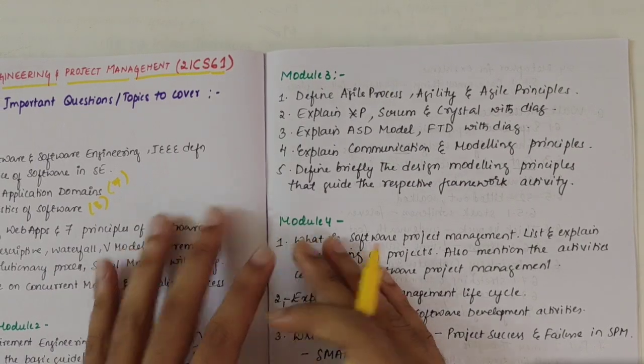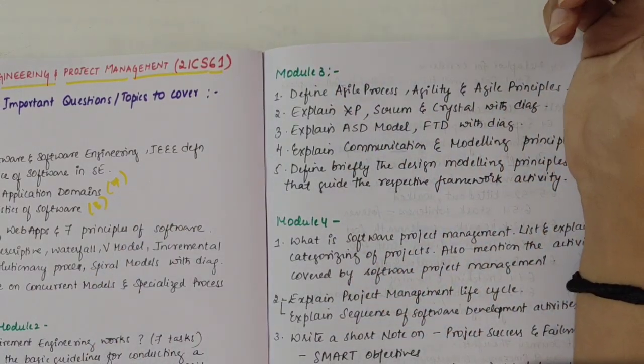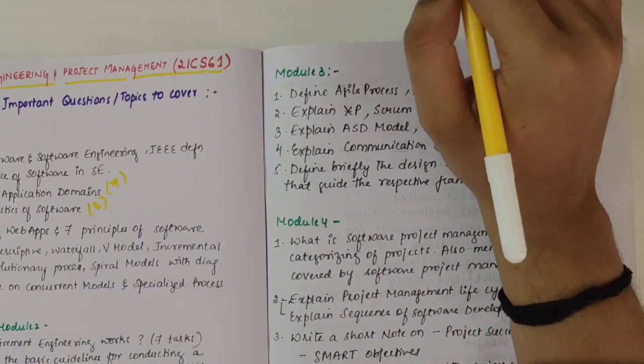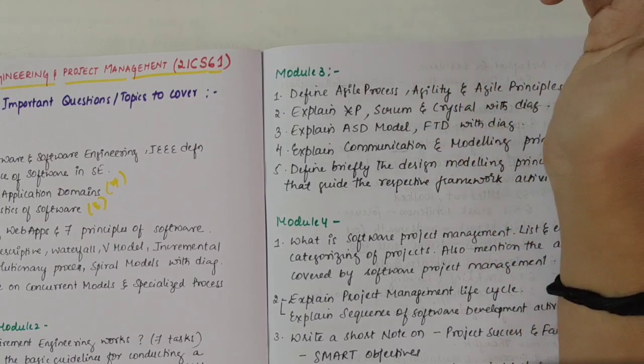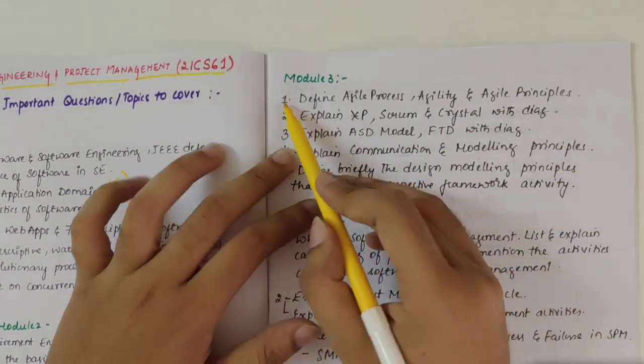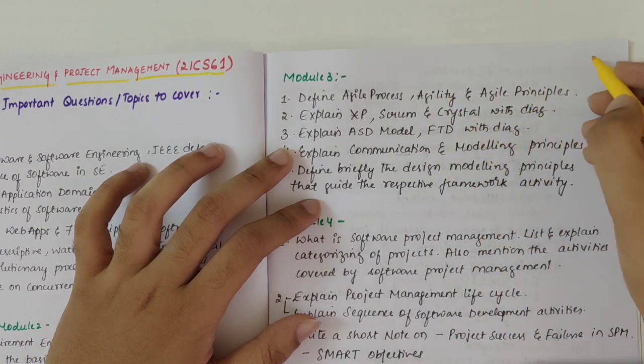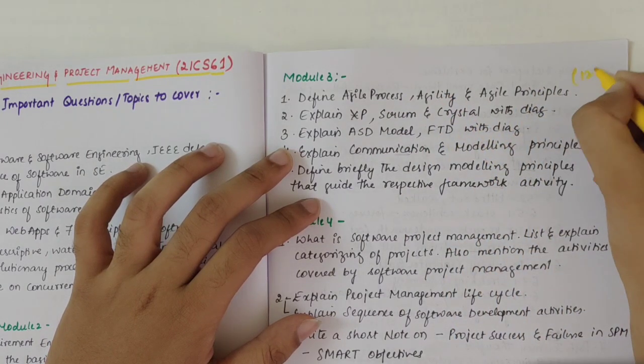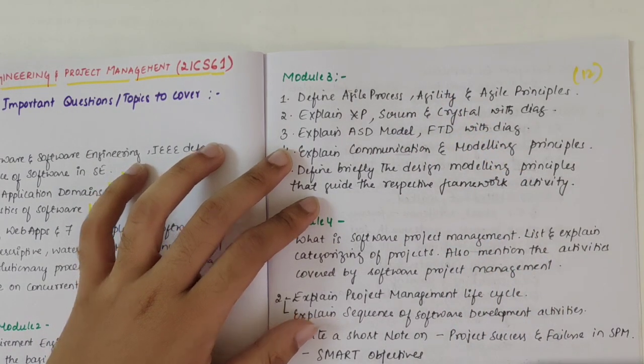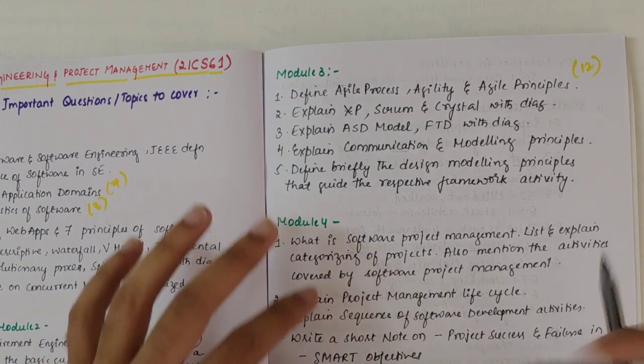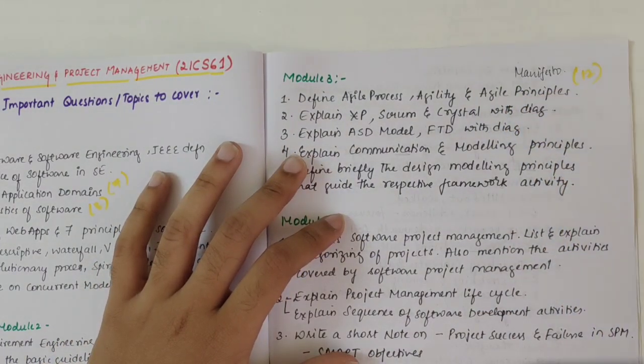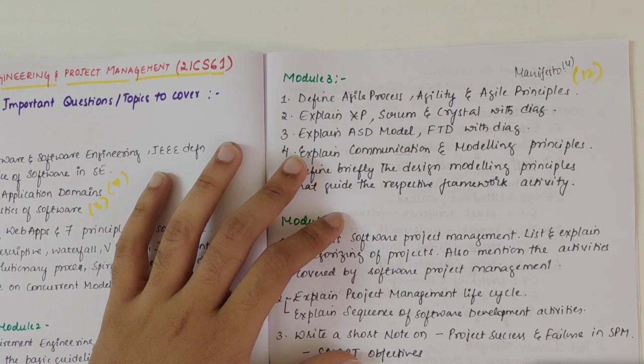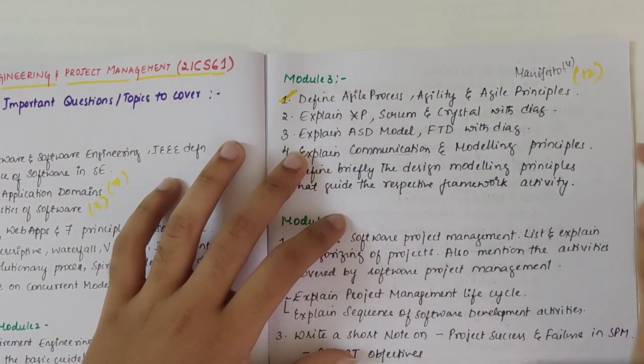Moving on to third module. I would say that in SEPM subject first module and third module are easiest ones because there are standard set of questions here and we can easily score marks. First one is define agile, agile principles and what is agility and 12 agile principles. Along with this even the manifesto could be asked - agile manifesto also. There are four agile manifestos. This is a sure short question.